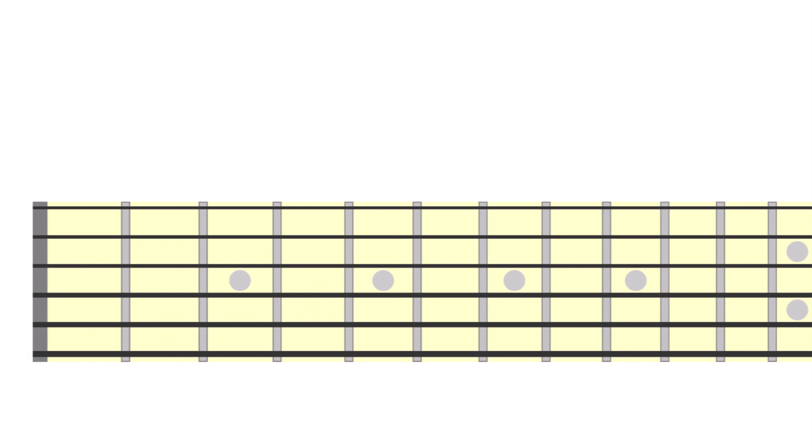The diminished 7th chord also commonly occurs between the 4 and 5 chords in major keys. For example, in the key of G major, C major would be our 4 chord, and D major our 5 chord. So, we could place a C sharp diminished 7 chord in between C and D. We might climb our way to this chord as follows.